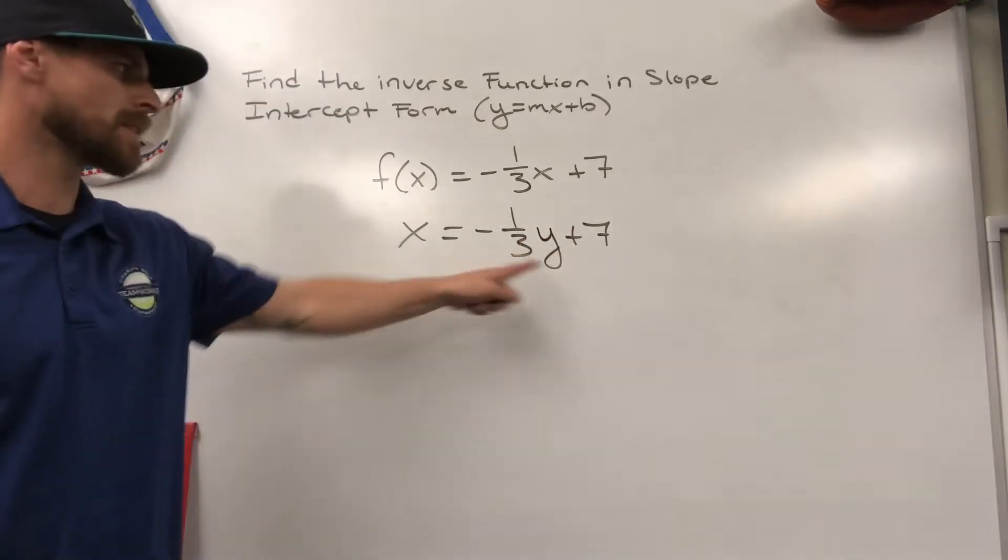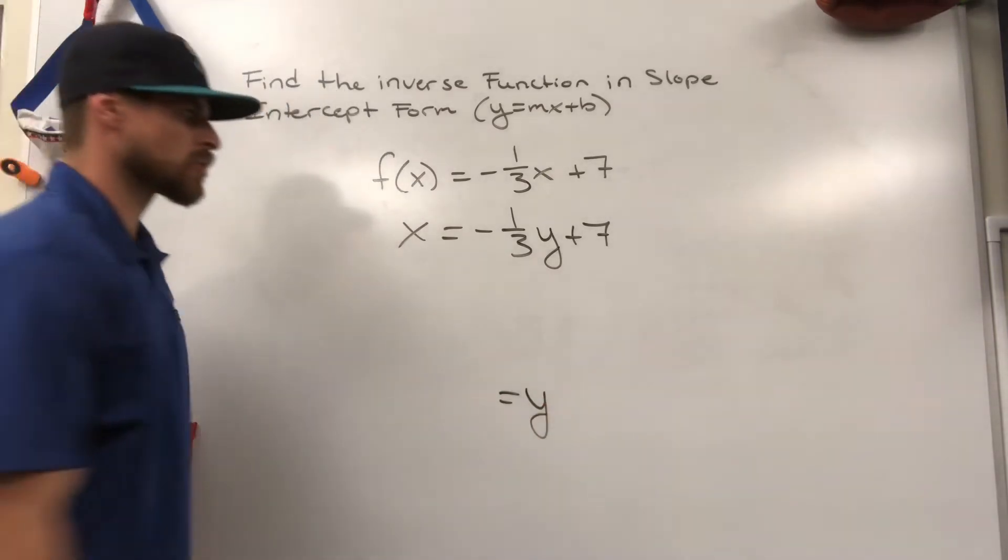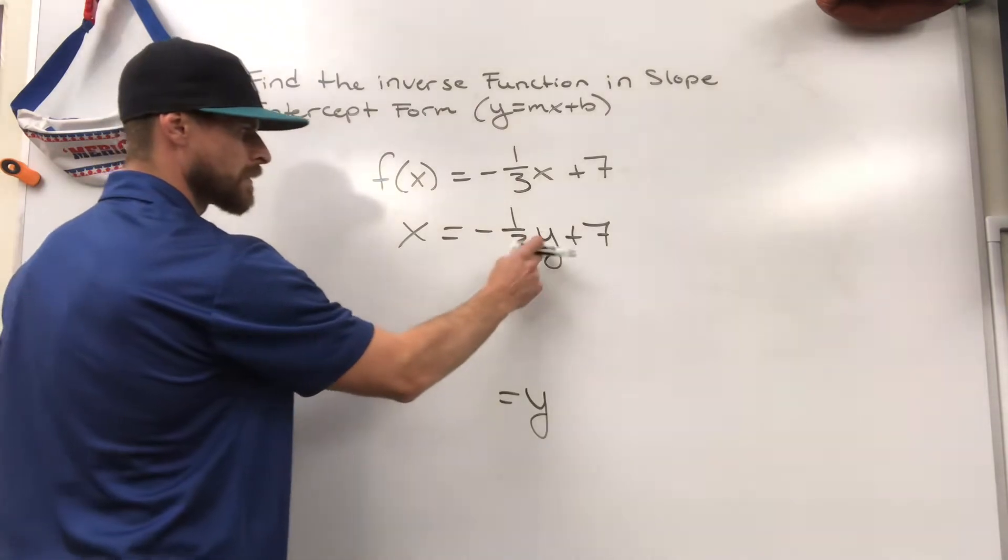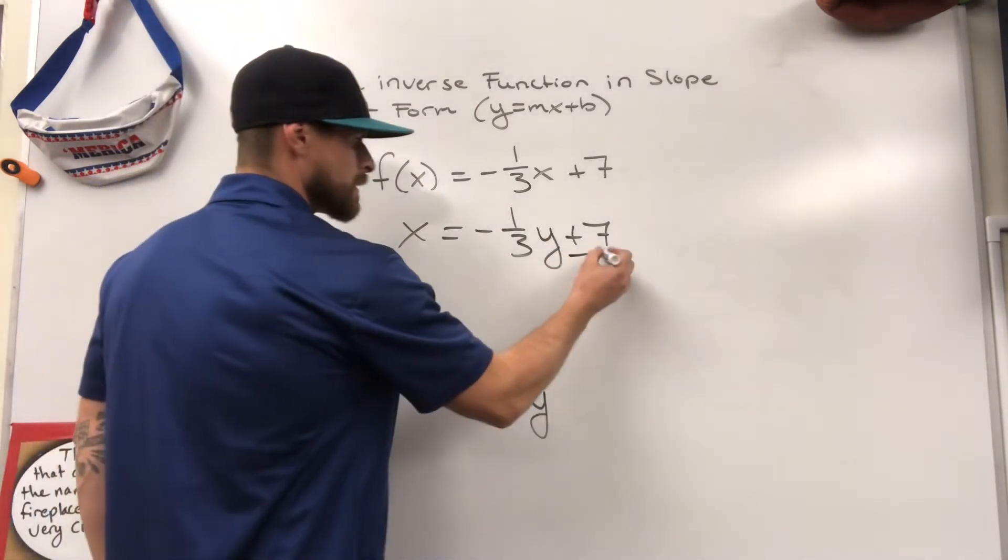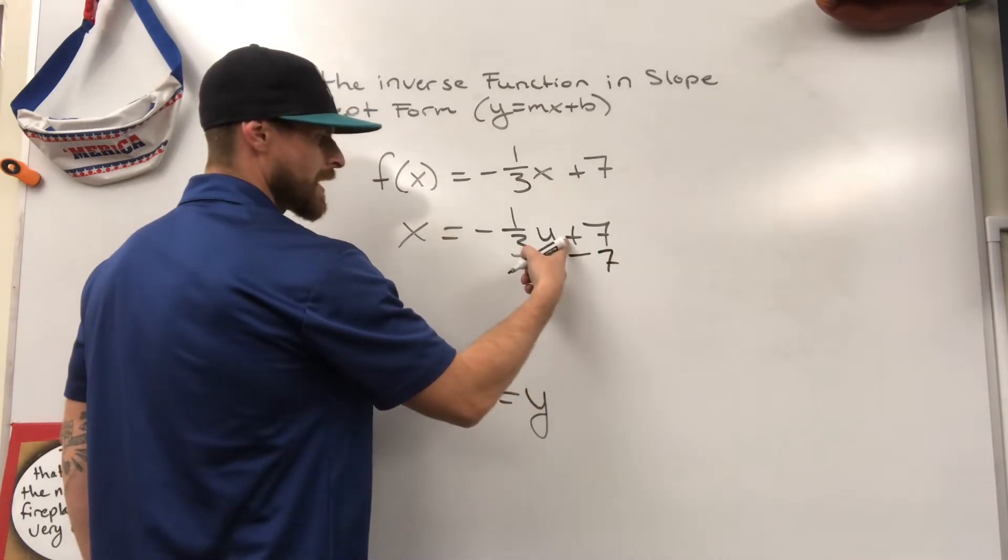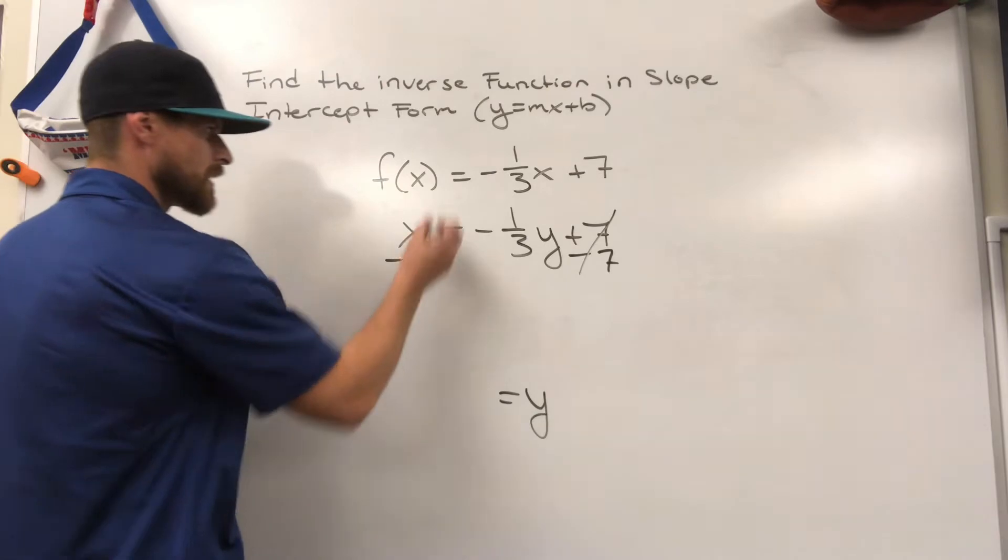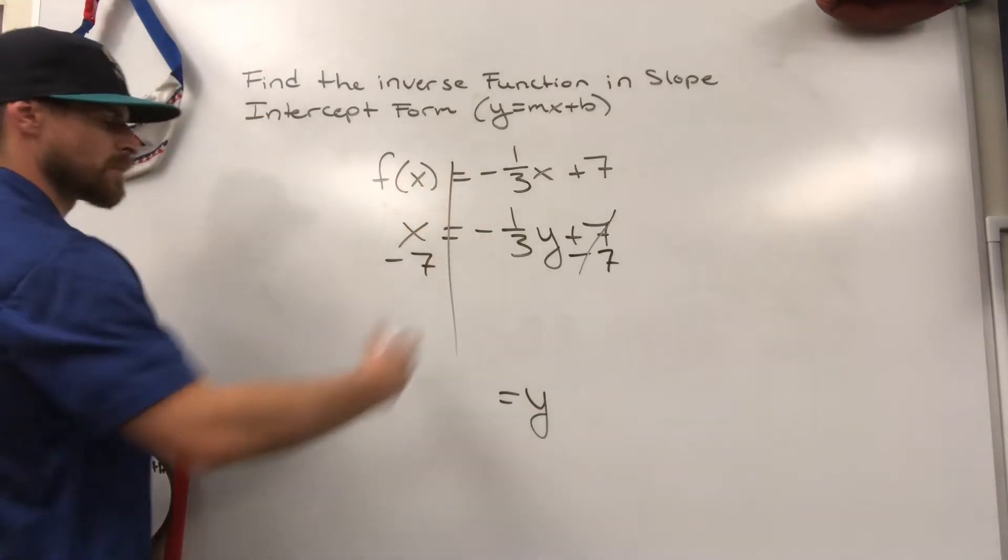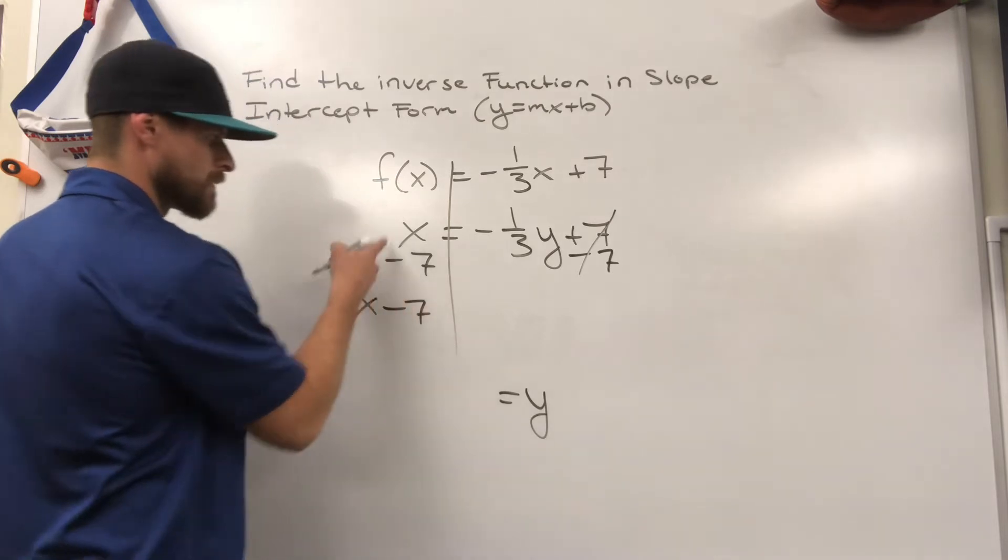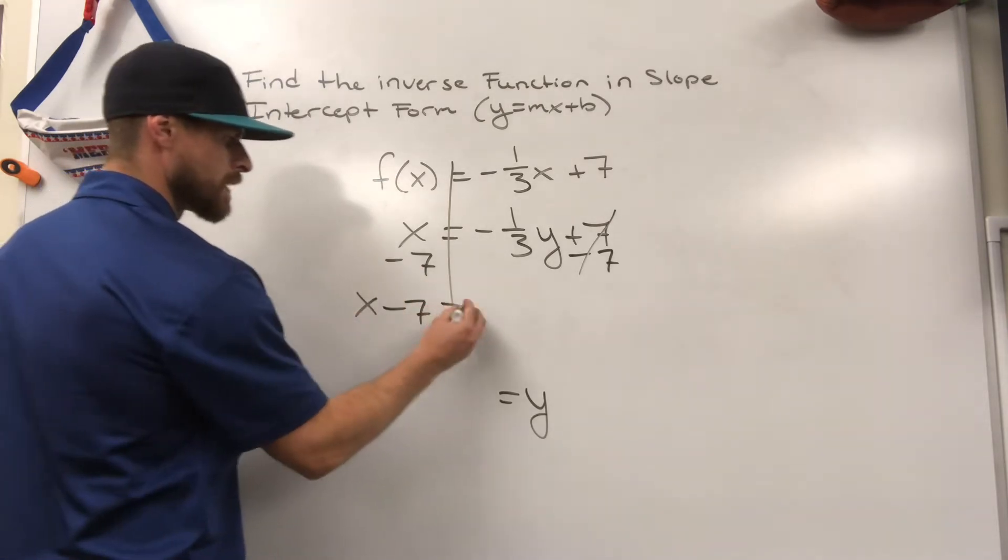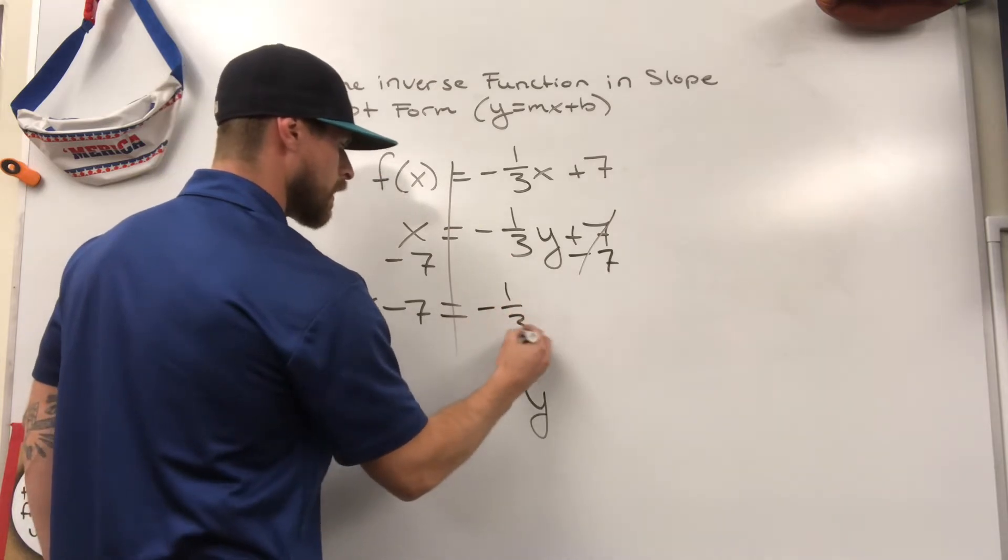Now once I've done this, we're trying to get y by itself. We're trying to solve for y. So I need to remove the seven and the negative one-third as a coefficient of the variable. Inverse operation of adding seven is subtracting seven, that's going to eliminate it. Take away seven on the other side. Remember we want to separate the left and right side of our equations. We now have x minus seven on the left side, and it's equal to negative one-third y on the right.